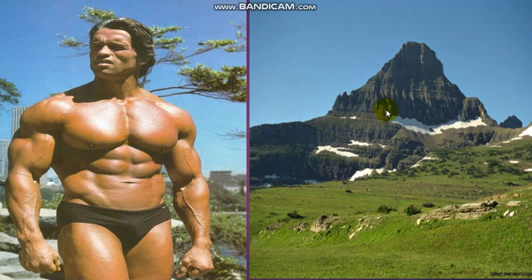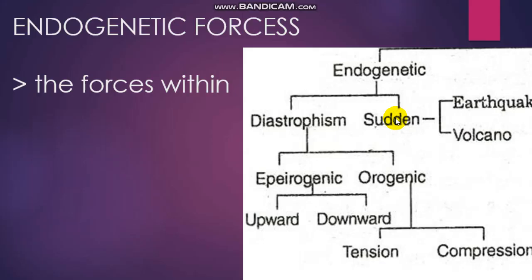The uplifted and elevated portions of the earth could be compared to the muscles of a bodybuilder. Similarly, these formations are due to the internal stresses that are put up, and these internal forces are known as endogenetic forces. The word 'endogenetic' can be split into two parts: the prefix 'endo' and the word 'genesis.' Endo means internal and genesis means origin or formation.